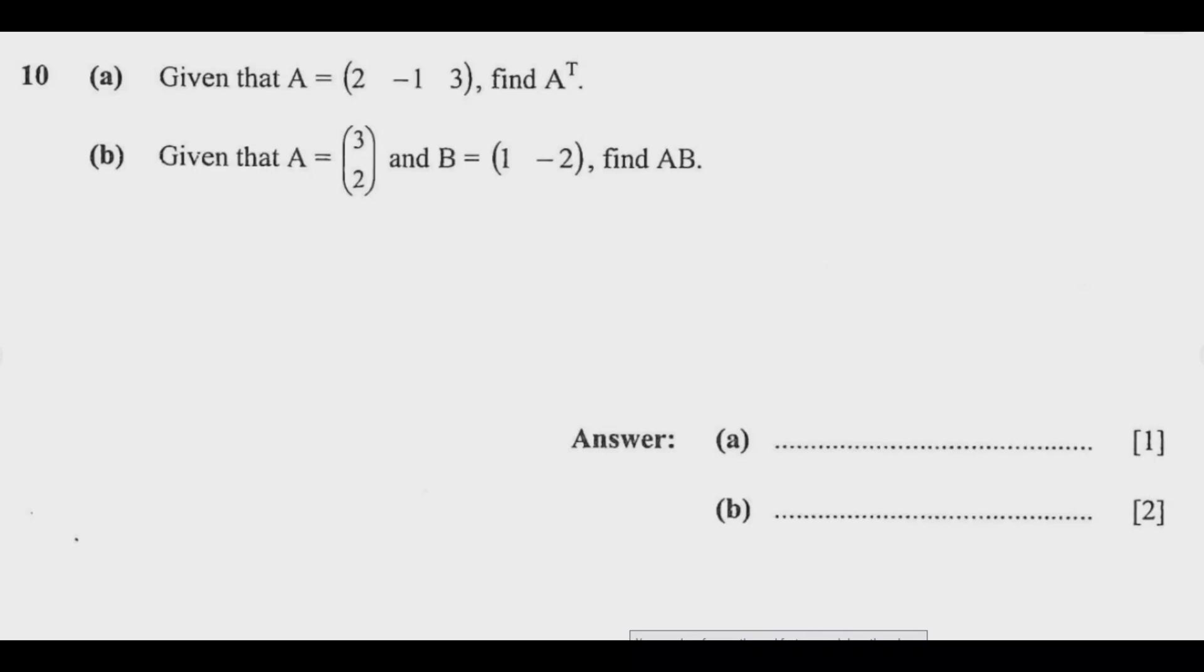Let us answer part (a). It's quite simple. If you're given a matrix like (a b; c d)—this kind of matrix—to find A transpose, what you do is swap the rows and columns.